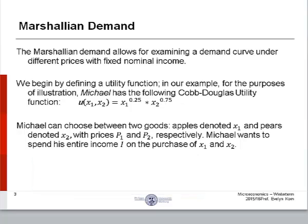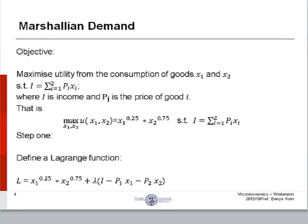Michael can choose between two goods, apples denoted x1 and pears denoted x2, with prices p1 and p2 respectively. Michael wants to spend his entire income, i, on the purchase of goods 1 and 2. x simply means the unit amount of good 1. So x represents an amount. It's important to remember that. So what is our objective? We want to maximize utility from the consumption of goods 1 and 2, subject to our budget constraint.